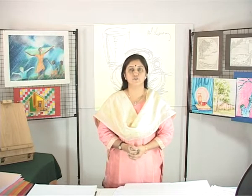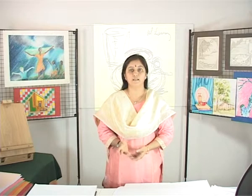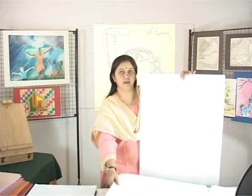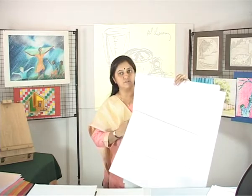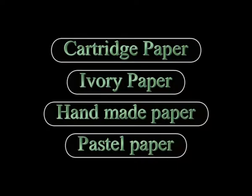We will now talk about the different types of materials. The first is Paper. Different types of paper are designed to be used with a wide variety of materials. Students would do well to familiarize themselves with the variety of papers manufactured specially for drawing. These come in many styles and qualities and may be chosen according to the requirement of the medium to be used — for example, cartridge paper, ivory paper, handmade paper, and pastel paper in different colours.